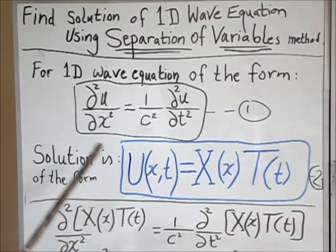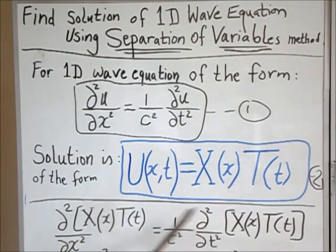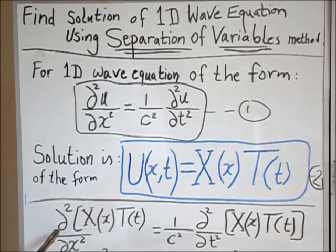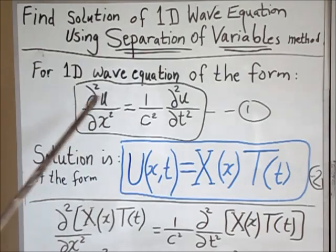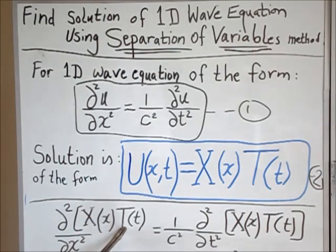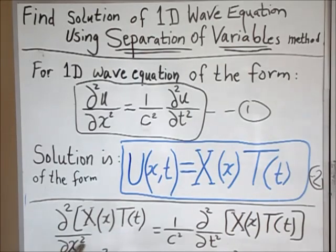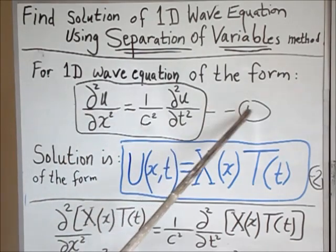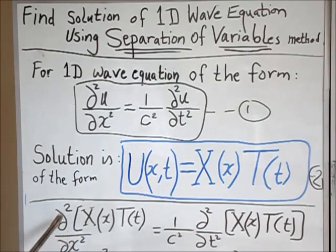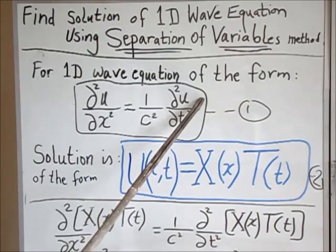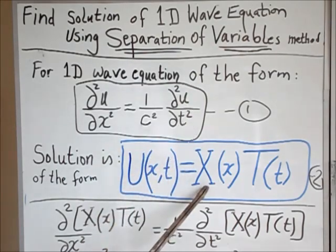To find what capital X and capital T are, we use equation one. We take the second derivative with respect to x of u, but since u equals X times T, we substitute: d²(XT)/dx² on the left side. On the right side, one over c squared times d²(XT)/dt². So we are substituting u = XT into equation one, replacing u with the product of the functions X and T.